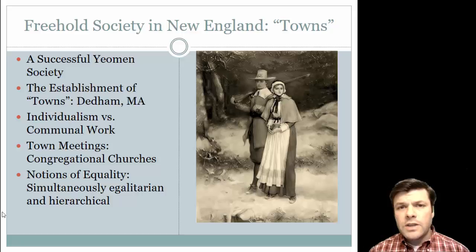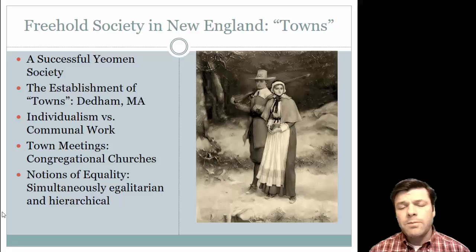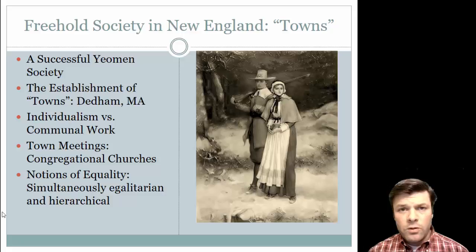One of the things that really set New England apart from Virginia was the concept of yeoman farming. Yeoman farmers were not producing for urban markets like London or Paris — that's who Virginia was producing for. So in Virginia you've got large plantations, whereas in New England you've got smaller farms in the very traditional sense. And as you'll find out, New Englanders are going to perfect yeoman society almost to a fault.